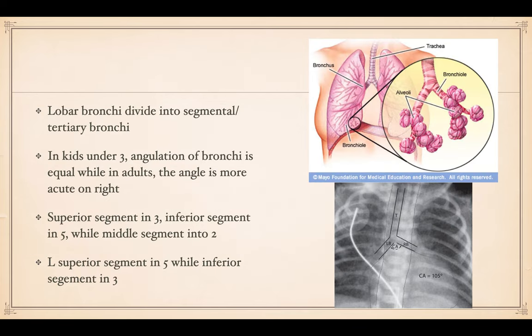The lobar bronchi will divide into the segmental or tertiary bronchi. In children, the angulation of the bronchi is equal, while in adults the angle is more acute on the right, as you can see here. In children, it's about equal — about 45 degrees on each side.